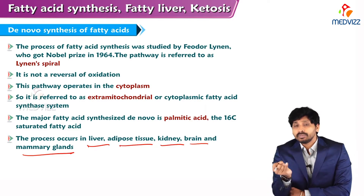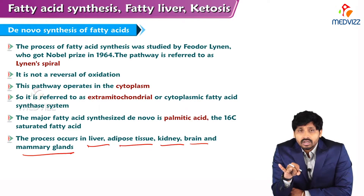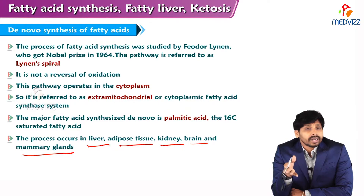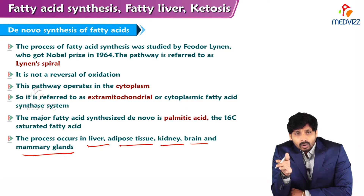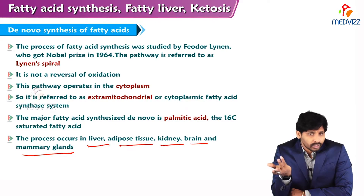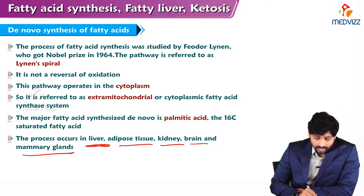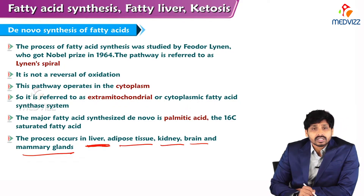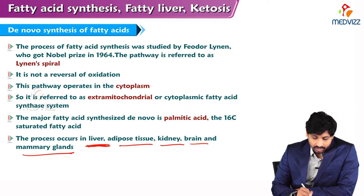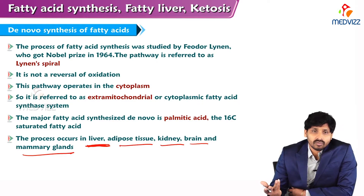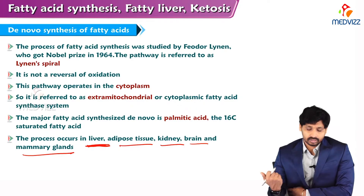In adipose tissue, the major storage form of lipids is triglycerides (TAG). When we need energy, TAG is broken down to separate fatty acids and glycerol. Fatty acids then undergo beta oxidation. So the liver, adipose tissue, kidney, brain, and mammary gland are the main places where fatty acid synthesis also takes place.